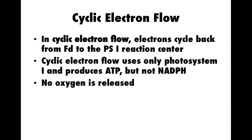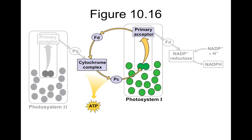Cyclic electron flow is different from linear electron flow. In cyclic electron flow, the photosystem doesn't produce enough energy to excite the electrons to the state where they can be added to NADP+ to form NADPH. We don't have the energy to split water or rip electrons away from water. What we do have is the energy to produce ATP.